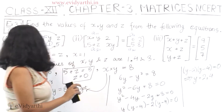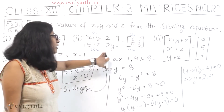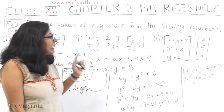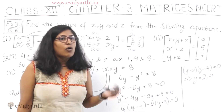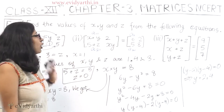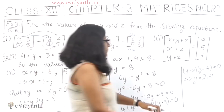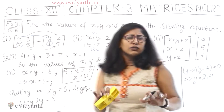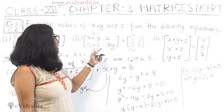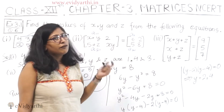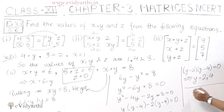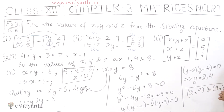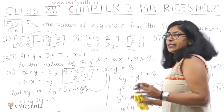Let's understand — when we have x, y, z, there is one value each. But here I have solved the quadratic and found two values for y. These two values are corresponding to y. If y equals 2, then x equals 4; if y equals 4, then x equals 2. So there will be two pairs as our answer. When x equals 2 and y equals 4: 2 plus 4 equals 6 — correct. Z equals 0 — correct. When x equals 4 and y equals 2: 4 plus 2 equals 6 — correct. And 4 into 2 equals 8 — correct.